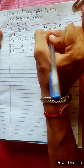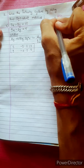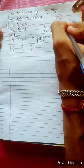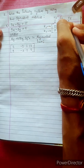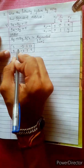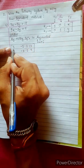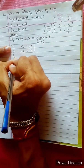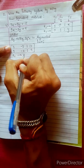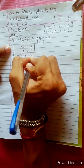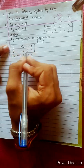This is the first row, second row, third column, second column. The goal is to make the main diagonal equal to 1 and the remaining diagonal equal to 0, and we will prove the values of x and y. R1 changes into R1 divided by 3.